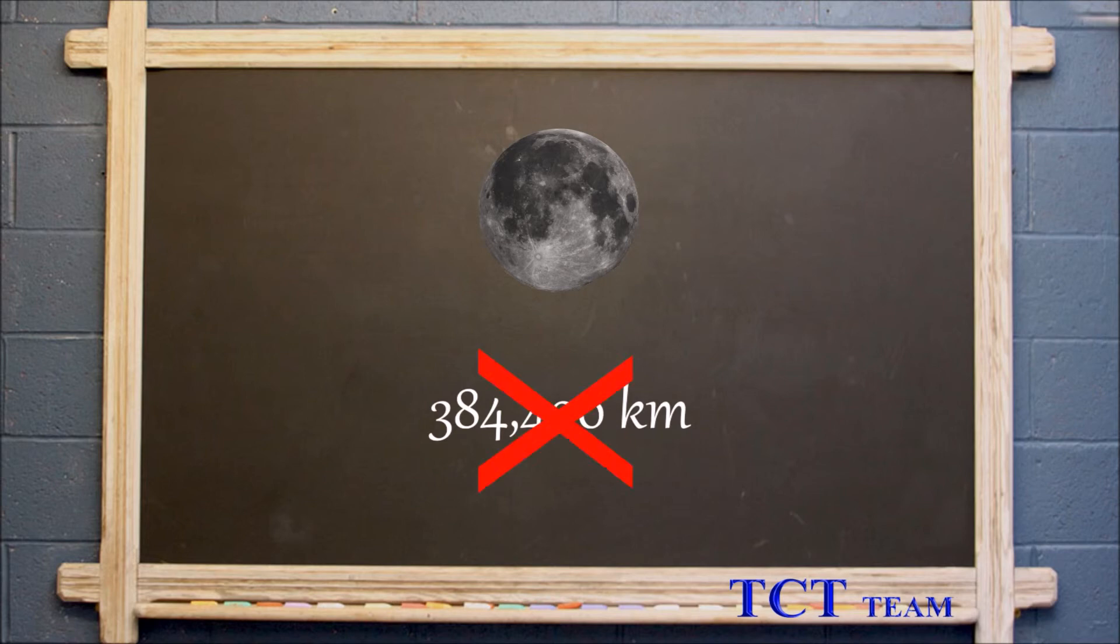This all means that next time you're looking at the Moon, don't think of it as being a linear distance away, but think of it as being 1.3 seconds in your past.